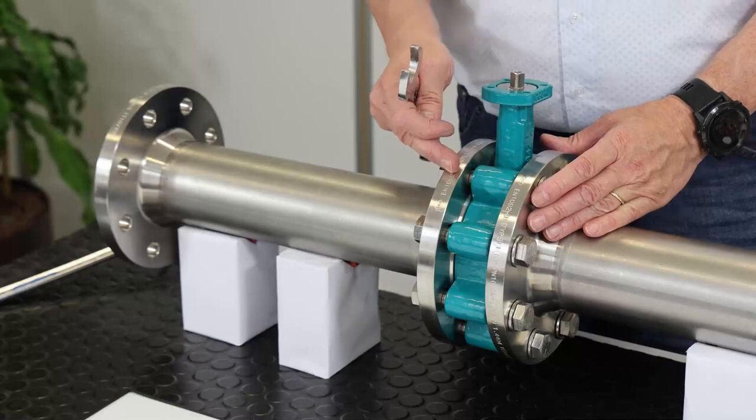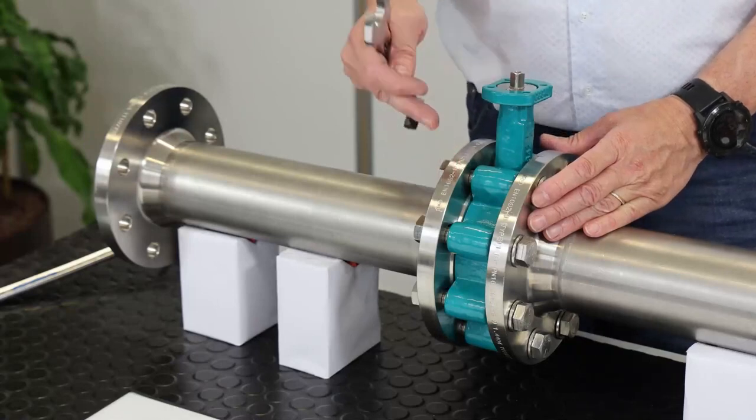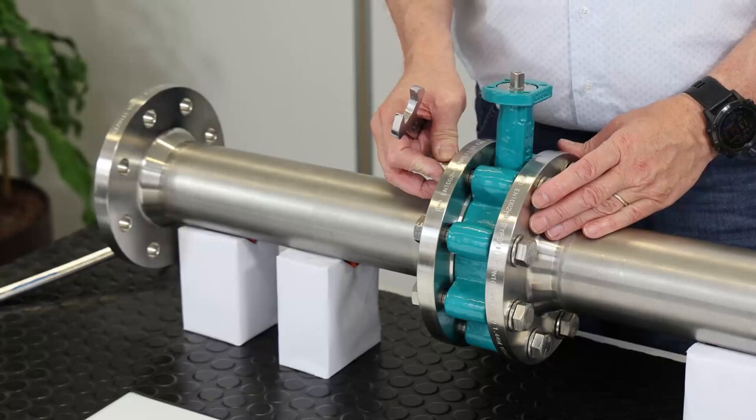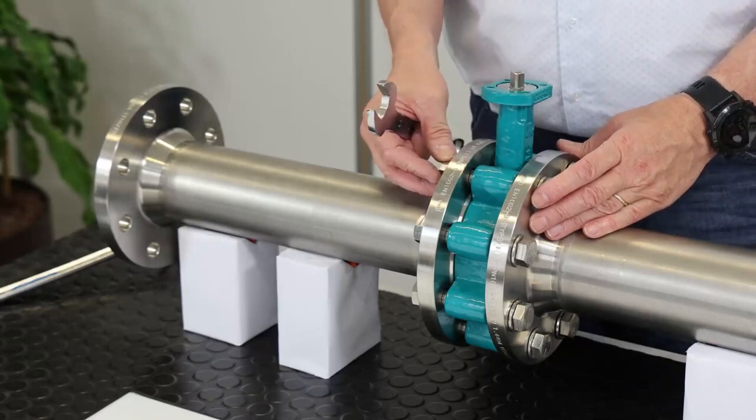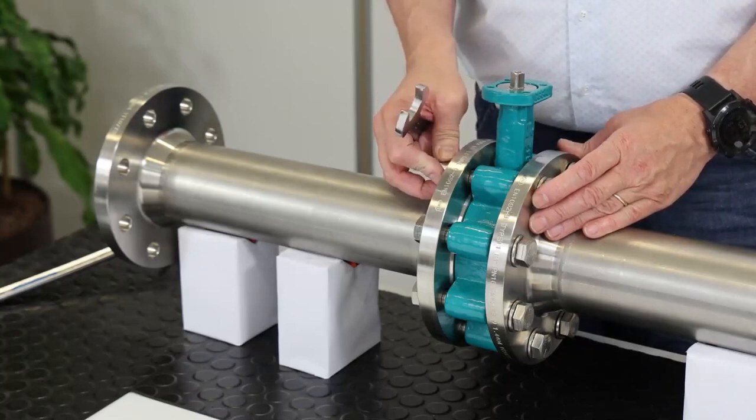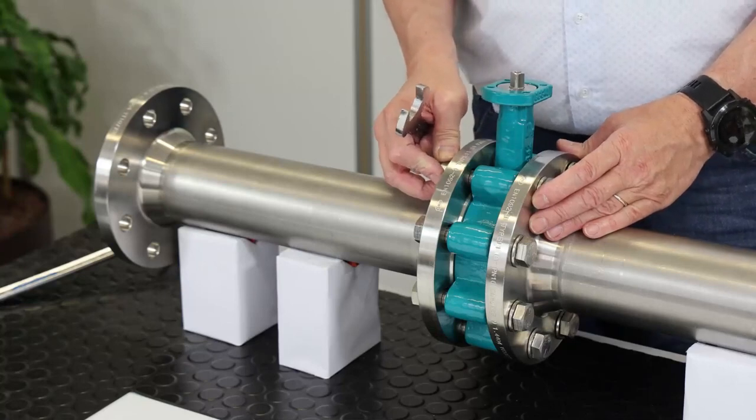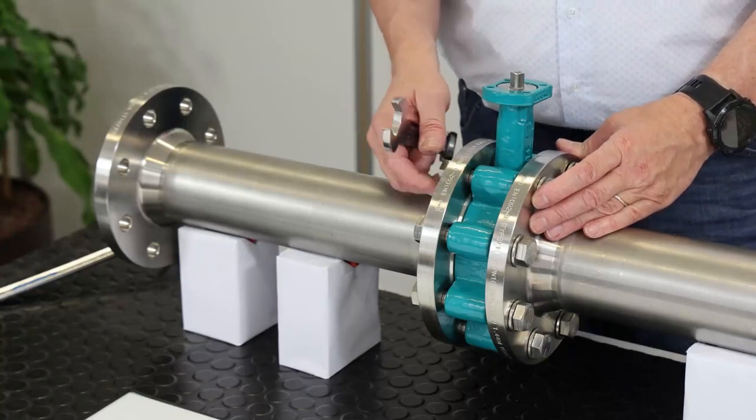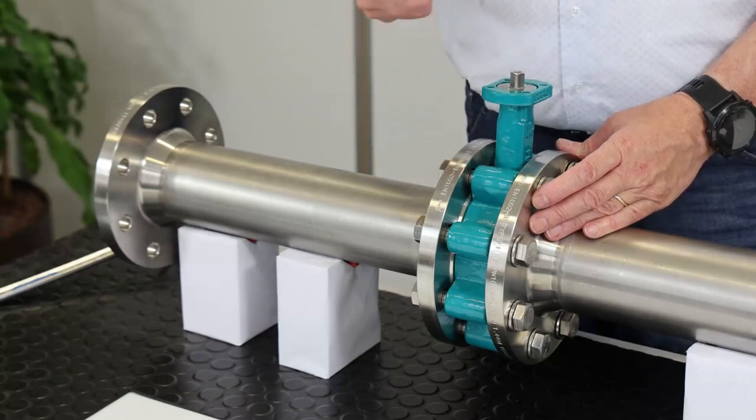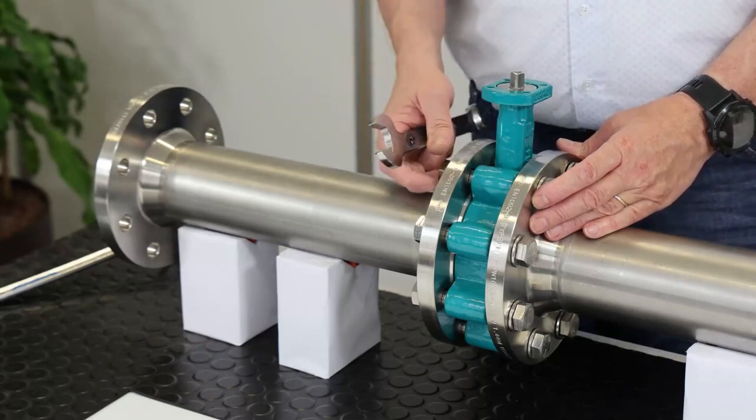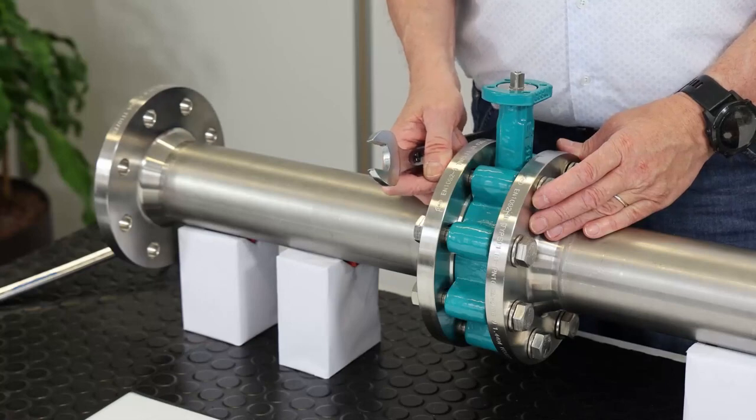On the Teflon line butterfly valve, you should consider the tightening torque table that you find in our installation documentation. There you see clearly how much torque you can apply to tighten the screws. If you use too much torque, you will deform the liner of the Teflon line butterfly valve.